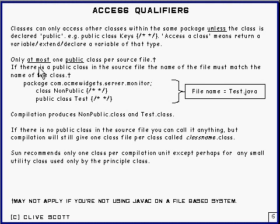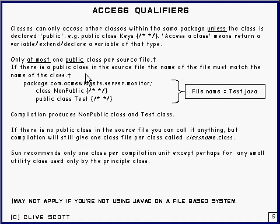For a specific implementation detail: you can have at most only one public class per source file. And if there is a public class in the source file, the filename has to match the name of the class; otherwise it can be anything. It's best to have only one class per compilation unit.